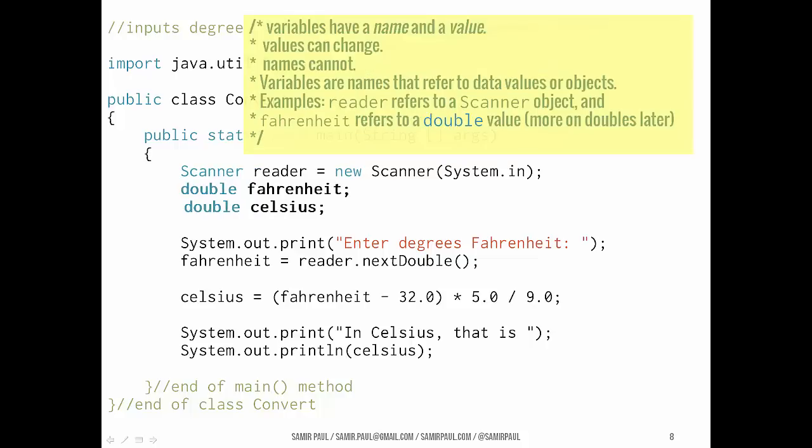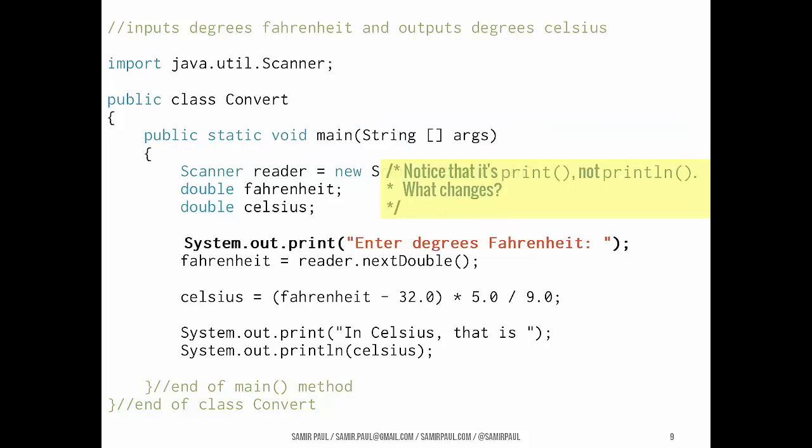Okay, next two lines. We haven't talked that much about variable types specifically, about data types specifically, but for now, what we're doing here is declaring two variables. We're saying, hey, I'm going to use one variable called Fahrenheit, and it's going to be a double type. That's the type of variable it is. And I'm going to use another variable called Celsius. That's also a double. Double is a variable type that we can use to hold decimal values. So that's what it's there for, as opposed to an int, which holds integer values. So here, we're declaring two variables, saying to the compiler, hey, we're going to use these two variables. Talk more about that later.